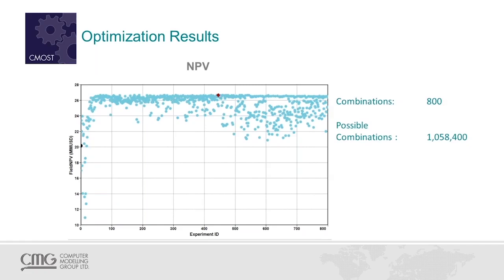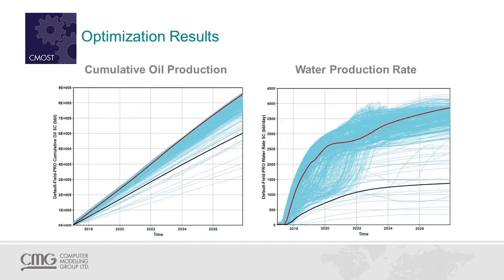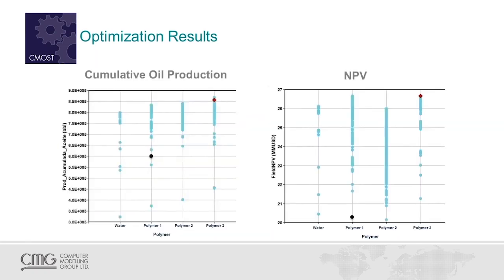CMOST provides different kinds of plots. One example is XY plots showing cumulative oil production — the black curve is the starting case, the light blue curves are the different experiments, and the red curve is the optimum solution. We will have more water production rate, but remember that cost is accounted for in our objective function. Another way to look at results is cross-plots. In the left-hand plot, we have cumulative oil production broken out by type of fluid: water, polymer 1, polymer 2, and polymer 3. We started our first run with polymer 1, but polymer 3 was selected as it gave the maximum NPV. Note that another alternative gives better cumulative oil production but is not as economical.